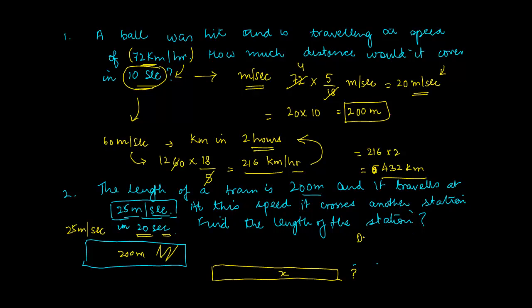So what's the total distance which the train will cover in this 20 seconds? It's travelling at 25 meter per second. So in 20 seconds it covers 25 into 20 or 500 meters.